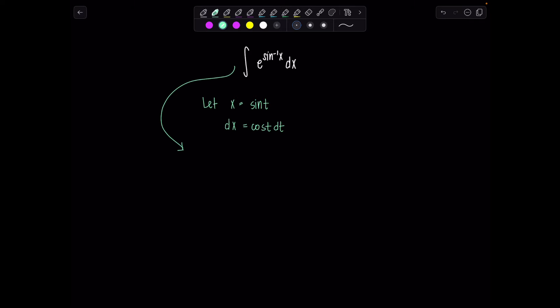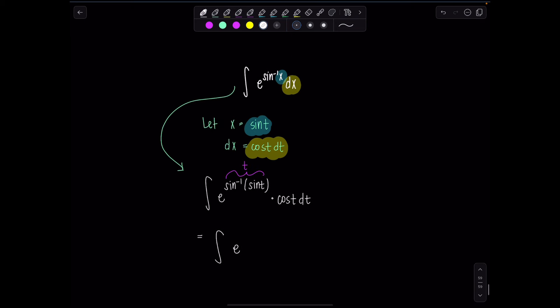I'm going to show you the cleanest method. So we're going to start off and let x equal sine of t. And then differentiating both sides, that means dx is cosine t dt. So now I want to rewrite this entire integral all in terms of t. We have e raised to the sine inverse of sine of t because I'm replacing x with sine of t. And then dx is going to be cosine t dt.